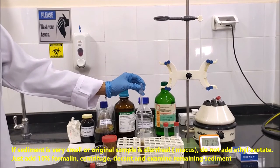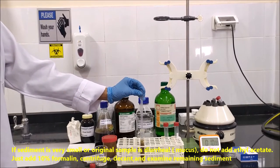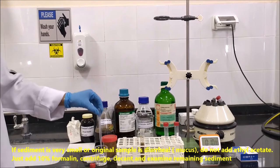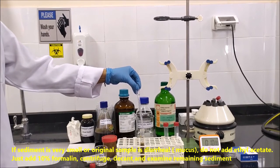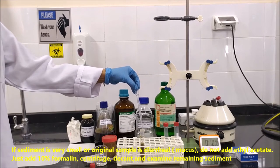If sediment is very small or original sample is diarrheal or mucoid, do not add ethyl acetate. Just add 10% formaline, centrifuge, decant, and examine remaining sediment.